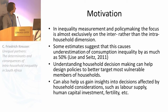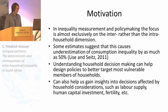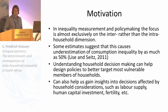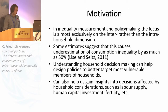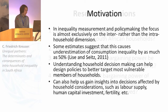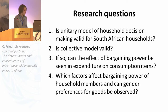With these motivations in mind, our research questions are as follows. We are asking four questions. The first is: is the unitary model of household behaviour valid for South African households? If it's not, is the collective model valid? If the collective model is indeed valid, can the effect of bargaining power be seen in expenditure on consumption items? And which factors affect the bargaining power of different household members? And can gender preferences for goods be observed?